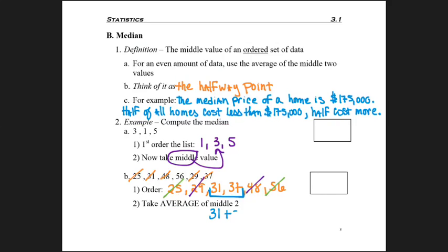So 31 plus 37 divided by 2. Why am I dividing by 2? Yeah, because there's two numbers in my list. You're probably doing all this on your calculator and just getting the value. There's no decimals, so I don't need to worry about rounding.